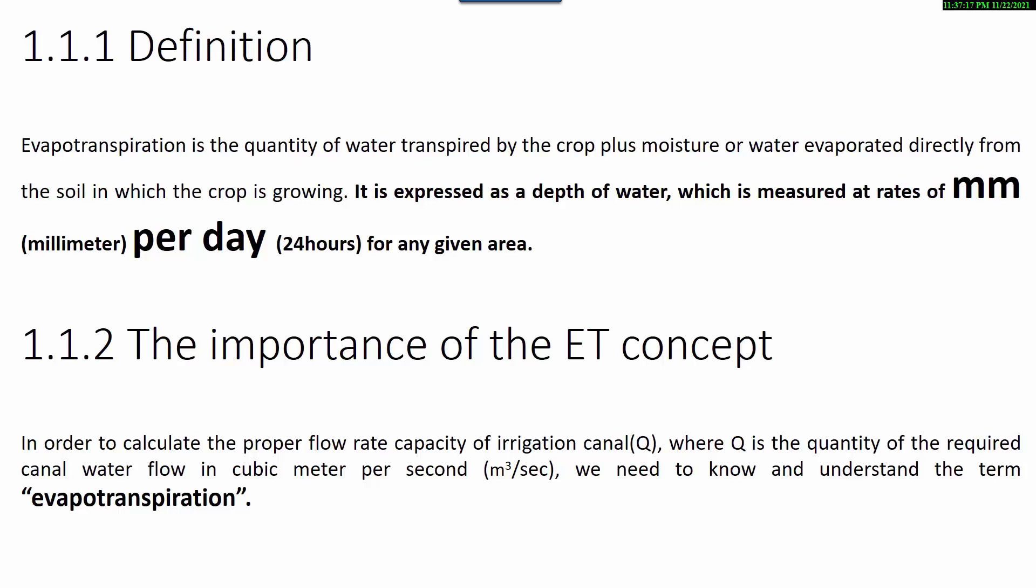Evapotranspiration is the quantity of water transpired by the crop plus moisture evaporated directly from the soil in which the crop is grown. It is expressed as a depth of water measured at rates of mm per day for any given area.